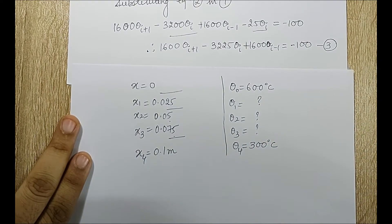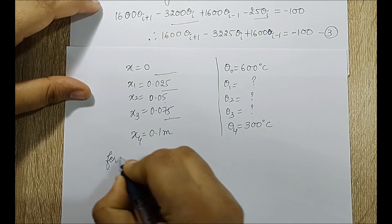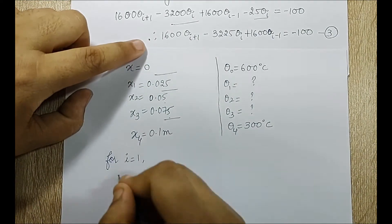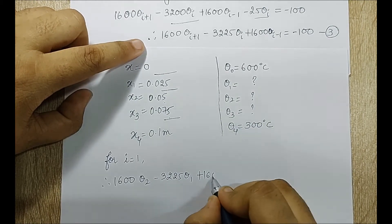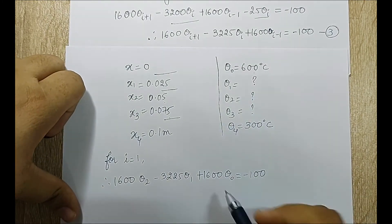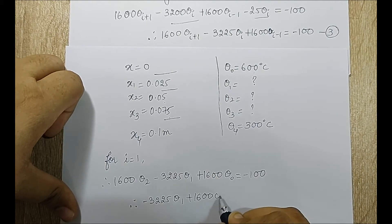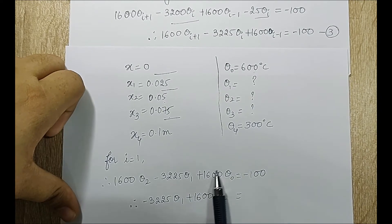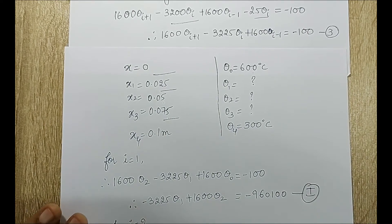For i equals 1, substituting into equation 3 gives minus 3225 theta_1 plus 1600 theta_0 equals minus 100. Since theta_0 equals 600, substituting gives minus 3225 theta_1 plus 1600 theta_2 equals minus 960100. This is equation 1 of the system.